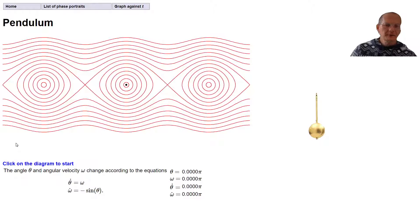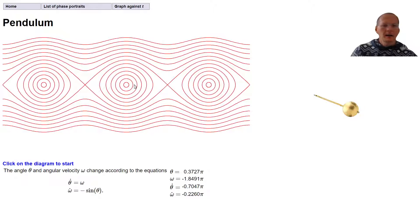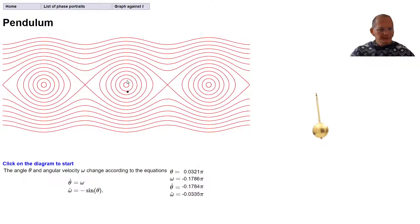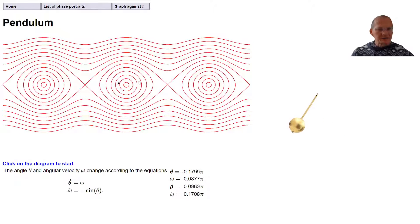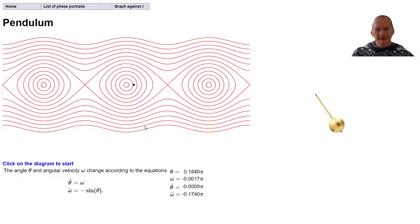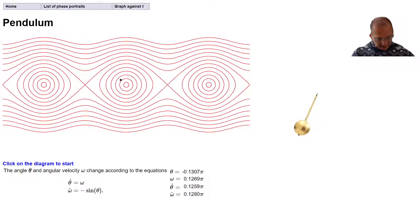In this video we're going to discuss the phase portrait for a swinging pendulum. We have a pendulum that swings backwards and forwards, and we want to understand the equations that govern this. There are two parameters we are interested in: the angle theta, which is the angle away from the vertical.